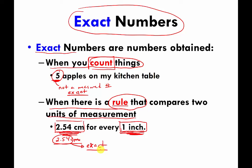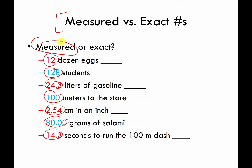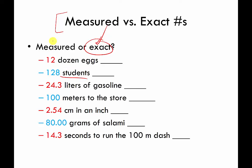So there are two types of numbers: measured and exact. On this slide, I want you to pause the video and look at the numbers I'm circling, then decide whether each is a measured number or an exact number. Look at the 12 in '12 dozen eggs,' the 128 in '128 students,' and do that for all of the numbers listed. Pause the video, and when you unpause it, I'll work through them.